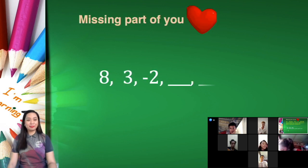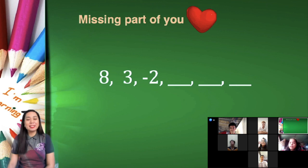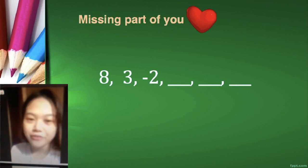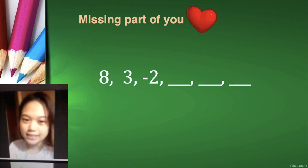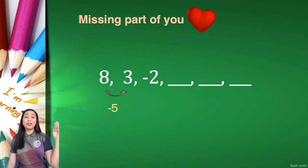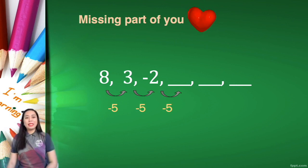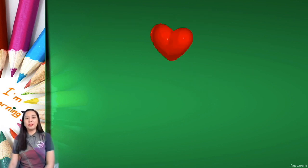What about 8, 3, negative 2, blank, blank, blank? Let's call on Christine May. The common difference is negative 5, and the three missing parts are negative 7, negative 12, and negative 17. Very good. Since this is decreasing, we are adding a negative number — negative 5. Negative 2 plus negative 5 gives negative 7; negative 7 plus negative 5 gives negative 12; and negative 12 plus negative 5 gives negative 17.